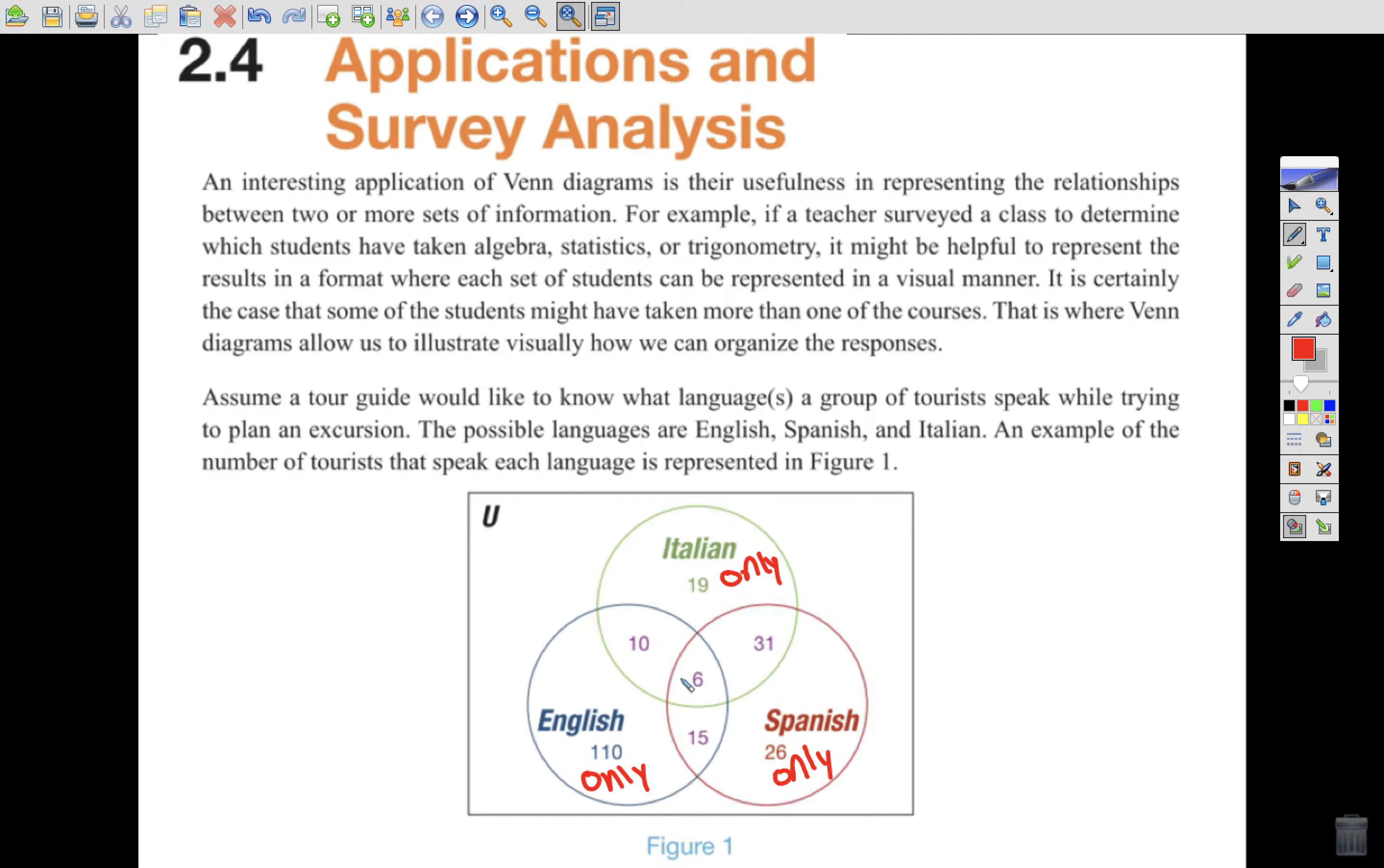Okay, so what do these numbers in here mean? Well, if I take this entire overlap, the intersection of English and Italian, I would say that 16 speak both English and Italian. I would say these 31 and 6 combined to 37 speak both Italian and Spanish, and these 21 right here, 16 and 5, or 15 and 6, sorry, these 21 speak both English and Spanish. Okay, so we have our only English, only Spanish, only Italian, our both language, and then we have these 6 right in the middle. Well, these are the people that can speak all three. Six people spoke Italian, English, and Spanish.